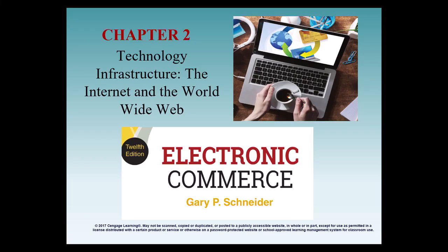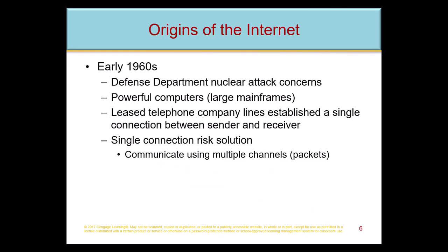Chapter 2 deals with some of the underlying structure of the internet and goes into some details about how it all works together. We actually go into this in a lot more detail in BA 131, Introduction to Business Technology. The interesting thing is where the internet started — it was really formed as an idea of how businesses working with the military could continue to communicate and conduct business if the country was under attack.